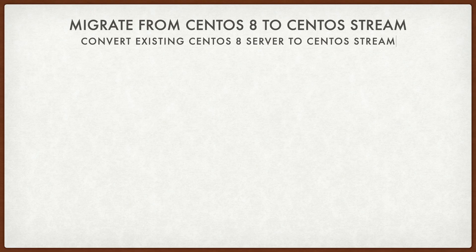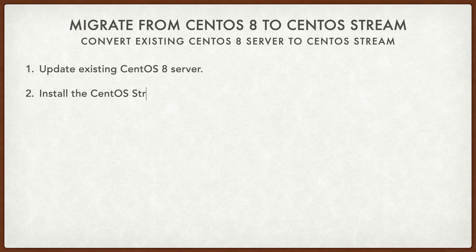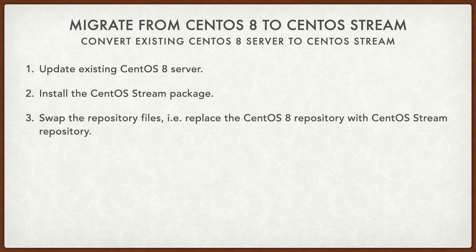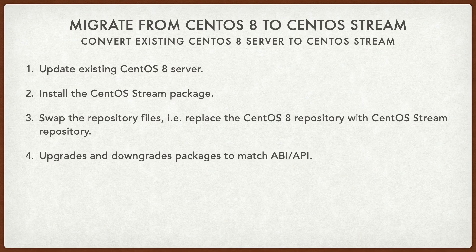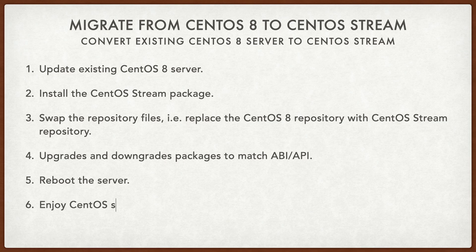So let's see how to convert an existing CentOS 8 server to CentOS Stream. First, make sure you update your existing CentOS server using the DNF utility. Then we need to install the CentOS Stream package. Then we swap the repos — that is, replace the CentOS 8 Linux repo with the CentOS Stream repo. Then again use the DNF utility to upgrade and downgrade packages to match the ABI and API for CentOS Stream. Then reboot the server, and finally we can enjoy CentOS Stream.